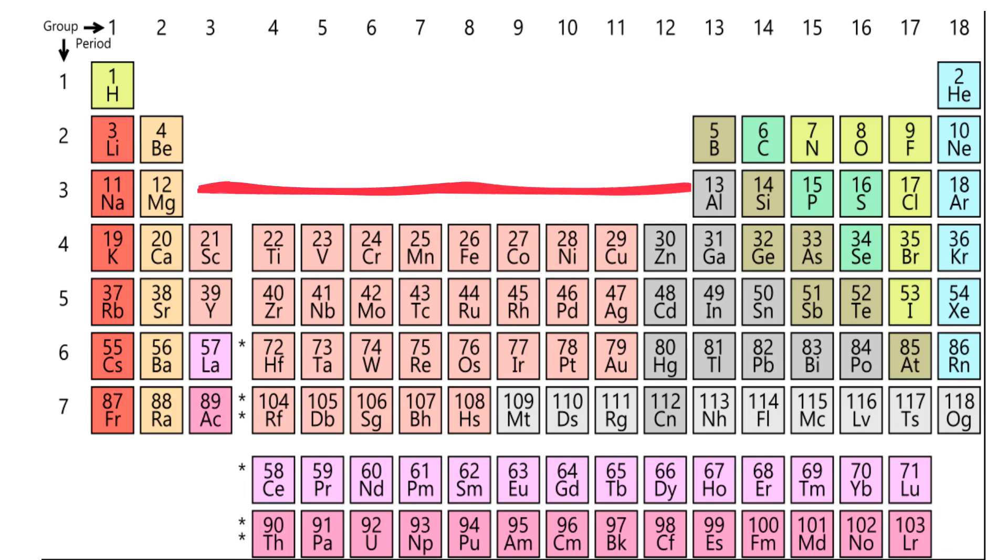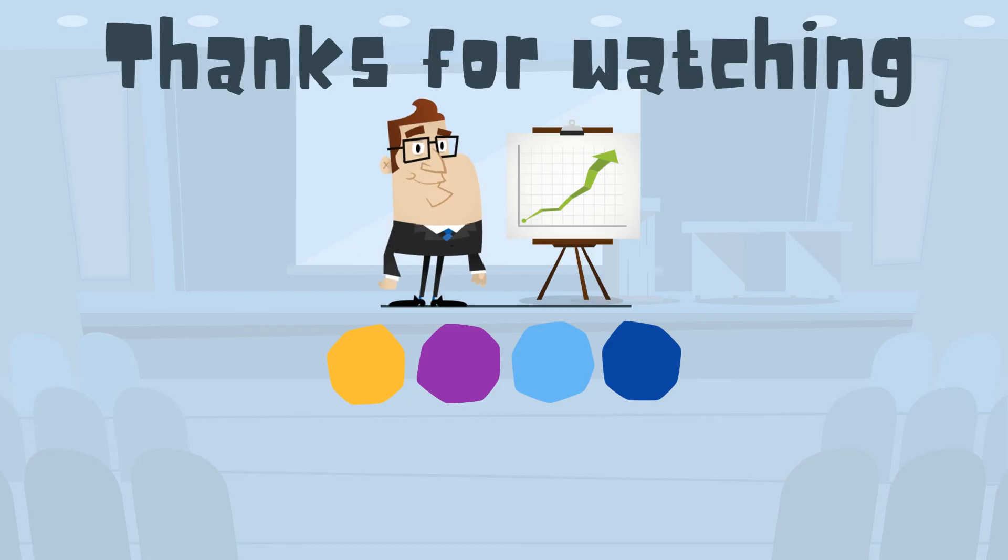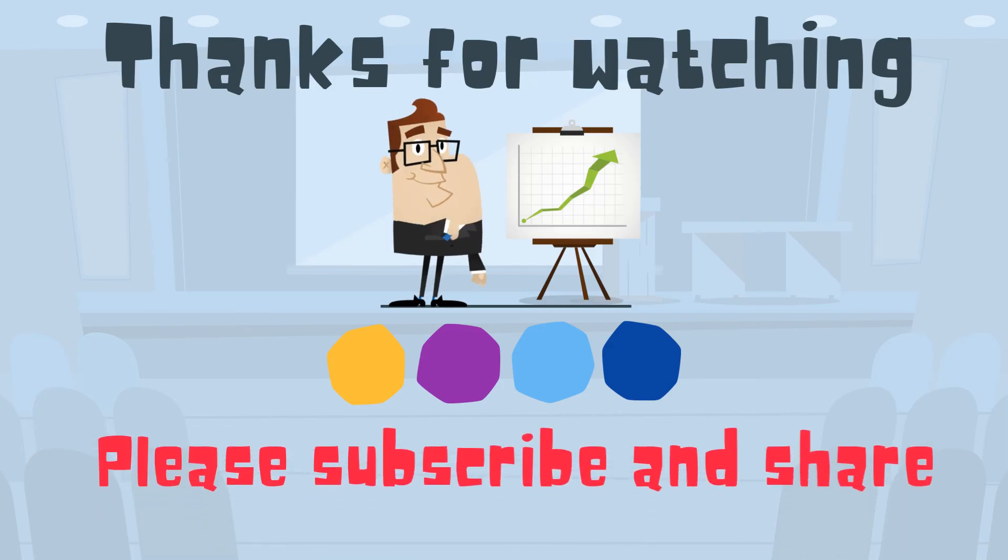So in summary, periods are horizontal and groups are vertical on the periodic table. Thanks for watching and MooMoo Math uploads a new math and science video every day. Please subscribe and share.